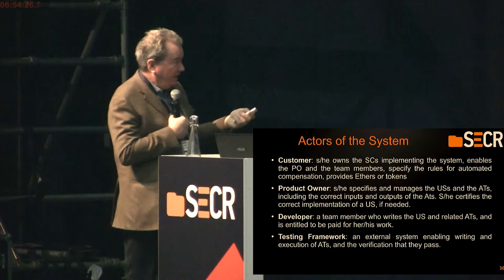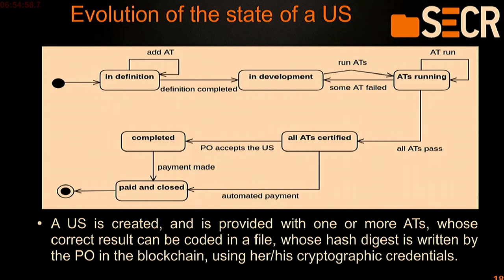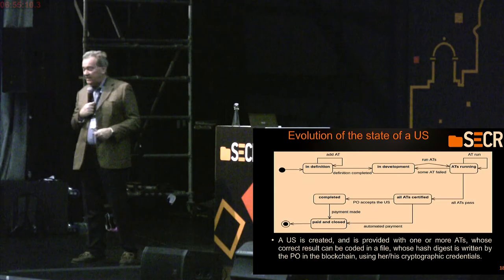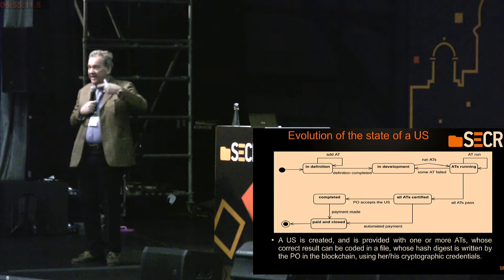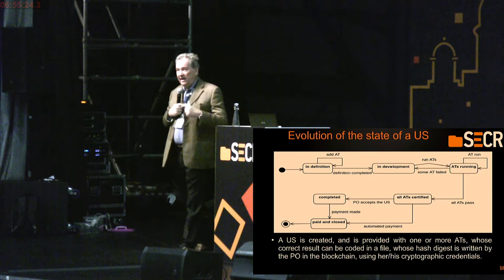We need the stories, the actors and their relationships, using a use case diagram of UML — here we don't have use cases but user stories, but the diagram can be useful. This is the evolution of the state of a story: first it is in definition, created by the product owner. Then still in definition, the product owner can add new acceptance tests and the hash of their results. When the definition is completed, the story passes into development and is developed — it may stay for some time there.